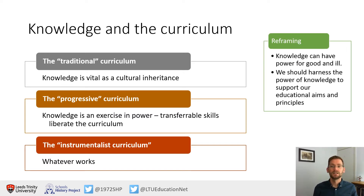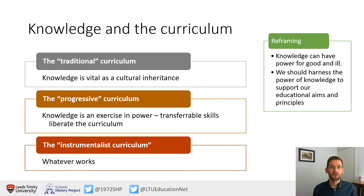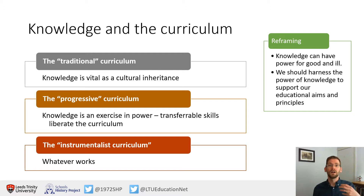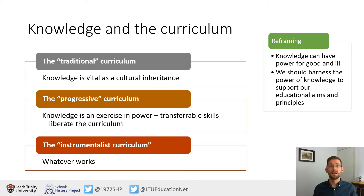The reframing, similar to Young's, is that knowledge can have power for good and ill — it depends what you do with it. Young's approach, with which I agree, is that we therefore need to recognize and harness the power of knowledge to support our own educational aims and principles. For Young there's a very deep social justice theme, much more in line with progressive thinking, but he wants to harness knowledge in order to give students access to social justice goals. For finding a third way, we need to start with our aims and think about how we can and should harness knowledge in order to further those aims.